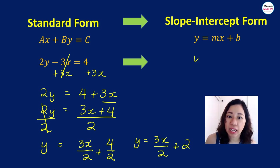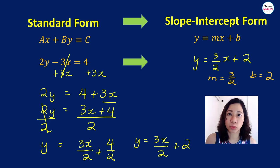But how do you write it in slope-intercept form? 3x over 2 can be written as, what is that number multiplied to x here? That is 3 halves. So we have 3 halves x plus 2. Therefore, what is our M? Our M is 3 halves and our B is 2.